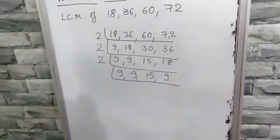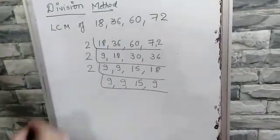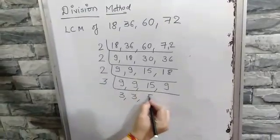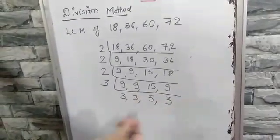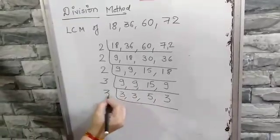After 2, which is our next prime number? It is 3, so we will go with 3. Three threes are 9, three threes are 9, three fives are 15. Now 3 and 5 both are prime numbers, so they are going to come on their own.